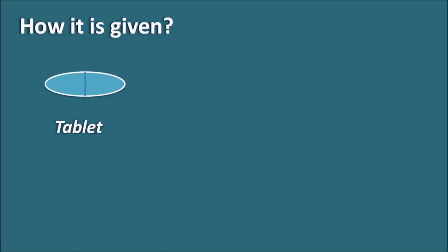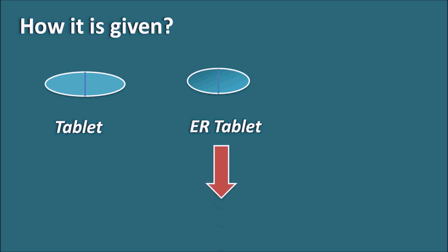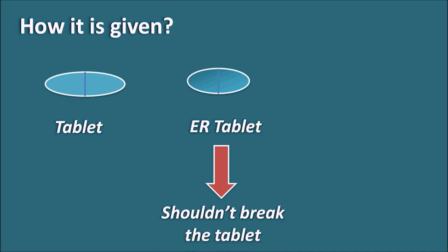How is Zolpidem given? Zolpidem can be given as an immediate release tablet or as an extended release — also called a controlled release (CR) tablet. When giving extended release or controlled release tablets, these tablets should not be broken because they are coated with a special polymer to release the drug in a controlled way. They should be swallowed intact so the drug is released over an extended period.